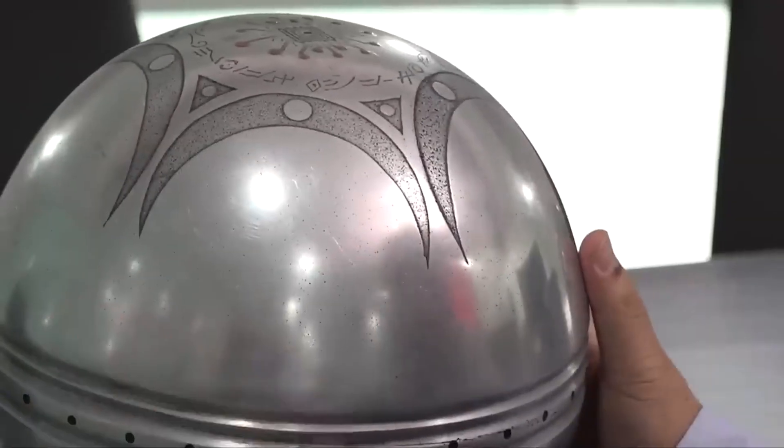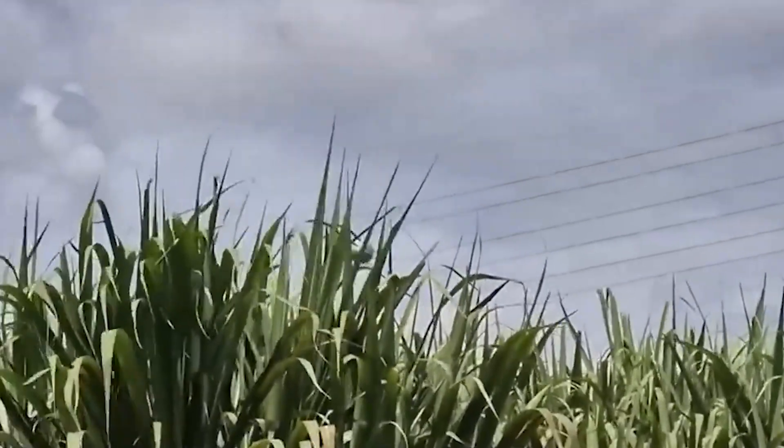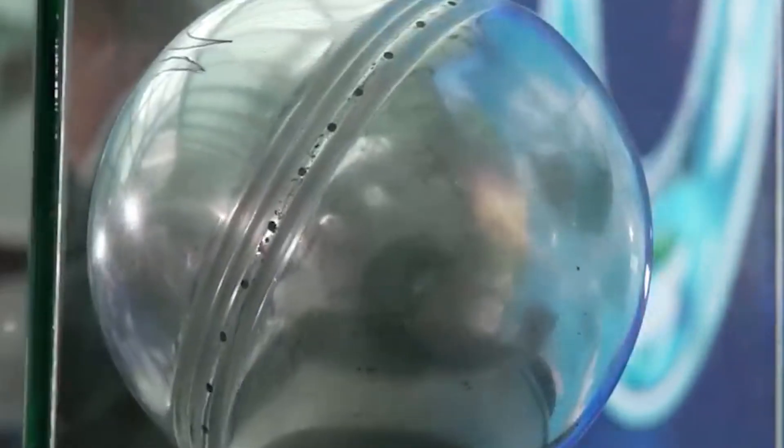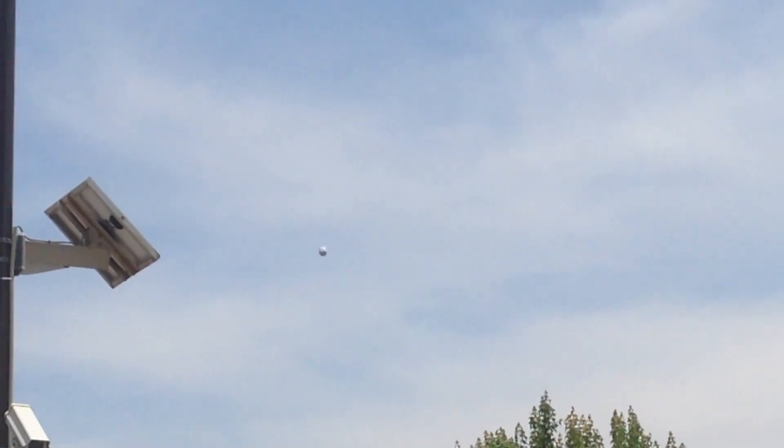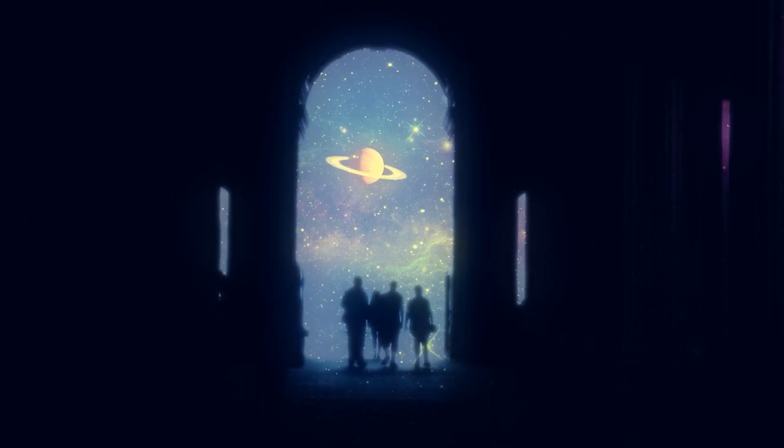Here's why this changes everything. One sphere is an anomaly. Two spheres is a pattern. It means they weren't just dropped by accident. It suggests they were placed deliberately for us to find. And if there are two, there are probably more scattered across the globe like a cosmic scavenger hunt.